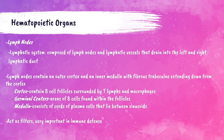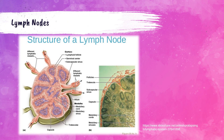Lymph nodes are bean-shaped structures located in the neck, armpits, chest, abdomen, and groin, responsible for filtering substances through the lymphatic system and containing lymphocytes to help fight infection. Each lymph node contains an outer cortex with inactive B cell follicles surrounded by T lymphocytes and macrophages, and an inner medulla consisting of cords of plasma cells that secrete antibodies. The germinal center of the lymph node helps produce antibody-secreting plasma cells and B cells, providing protection against reinfection.